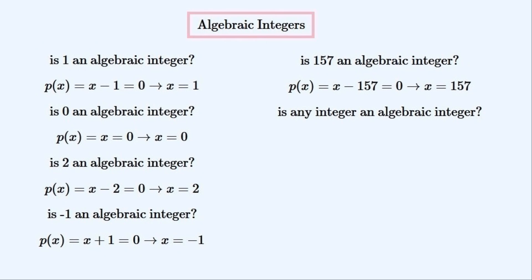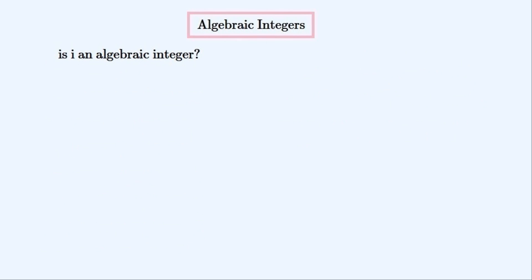We can write this down more formally for any integer: if n is an integer, then it is an algebraic integer, and its corresponding monic polynomial should be x minus n.